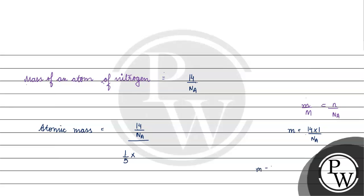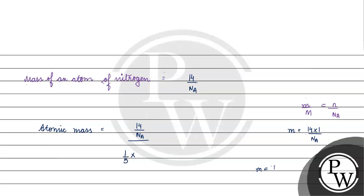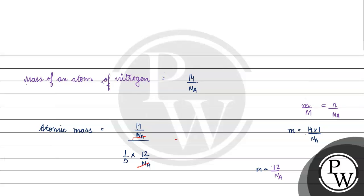The mass of an atom of carbon-12 on the conventional scale: its atomic mass is 12, so mass of one atom of carbon-12 is 12 divided by Nₐ. Substituting, our expression becomes (14/Nₐ) divided by (1/5 × 12/Nₐ). Nₐ cancels from numerator and denominator, leaving us with 14 divided by (12/5), which equals 14 times 5 divided by 12.